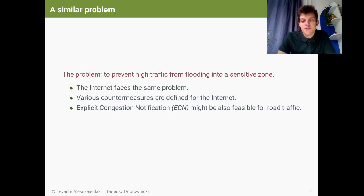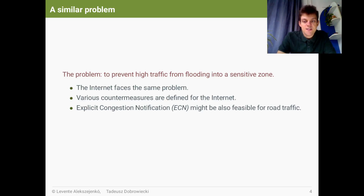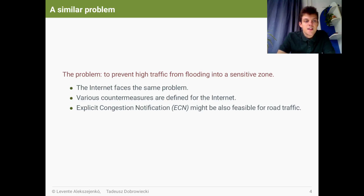If we look for similar problems in other engineering disciplines, we can find some solutions. For example, torrents are controlled by dams in the hills. Or another example is to keep the internet backbone infrastructure up and running — congestion has to be dealt with. For this reason, many congestion reducing methods have been already defined for the internet. One of them is the explicit congestion notification method, or ECN, which in fact is also applicable in the road traffic domain as an algorithm for intelligent traffic lights.